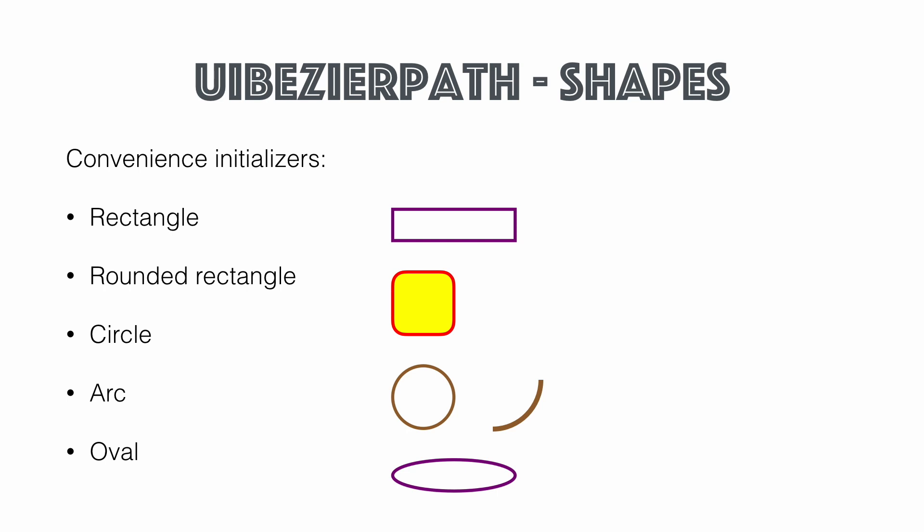UIBézierPath also has convenience initializers. You can create rectangles, rounded rectangles, circles, arcs, and ovals — all very easy with a single initializer. I've created a playground for you to play around with these initializers and see how they work on screen.